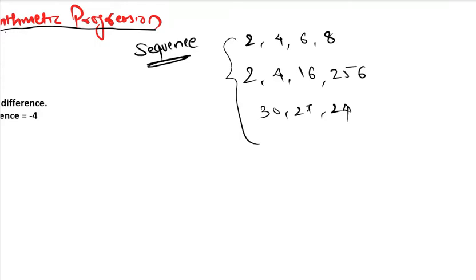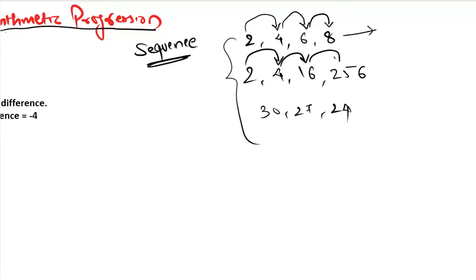What is special about these sequences? In the first, each number increased by 2 gives you the next number. In the second, each number when squared gives you the next number: 2 squared is 4, 4 squared is 16, 16 squared is 256. In the third, each number decreased by 3 gives the next number.